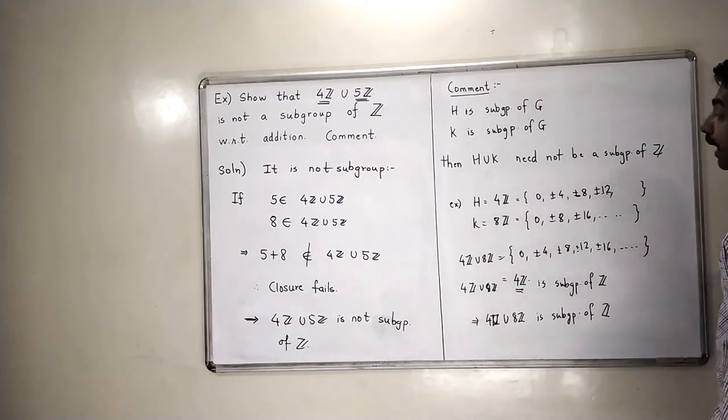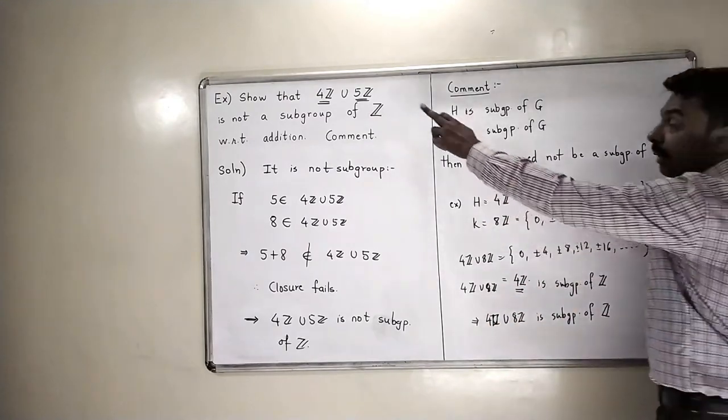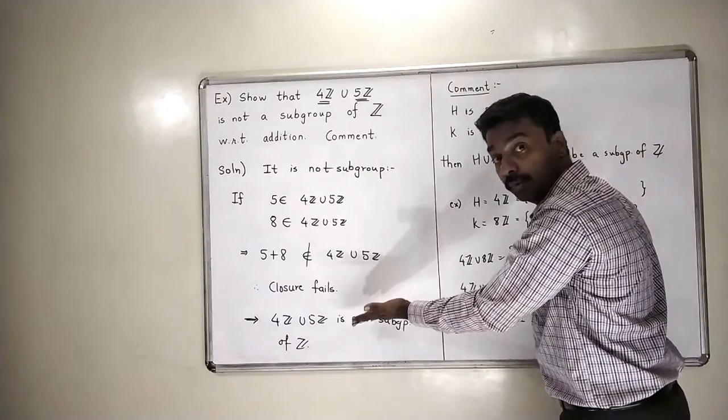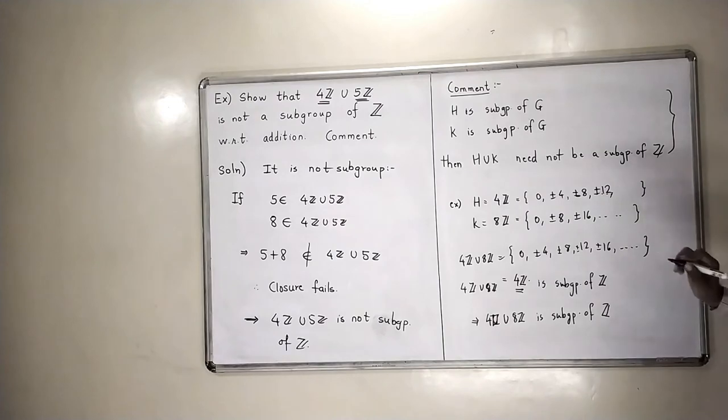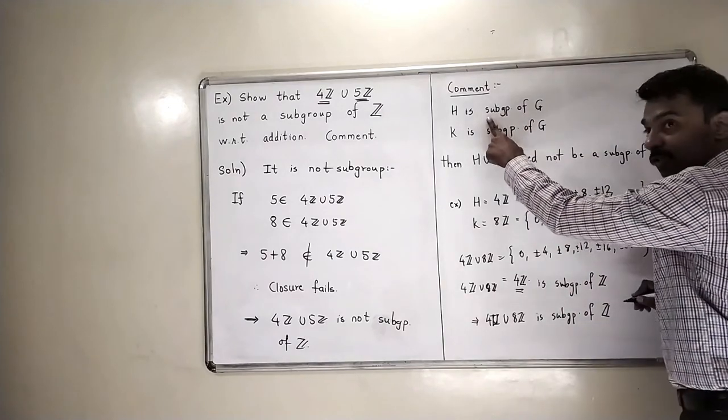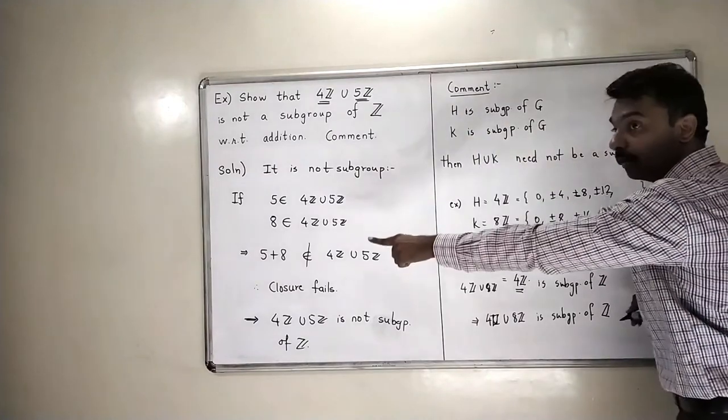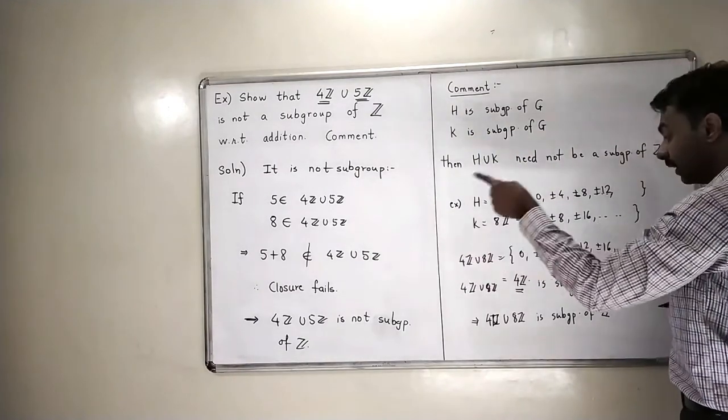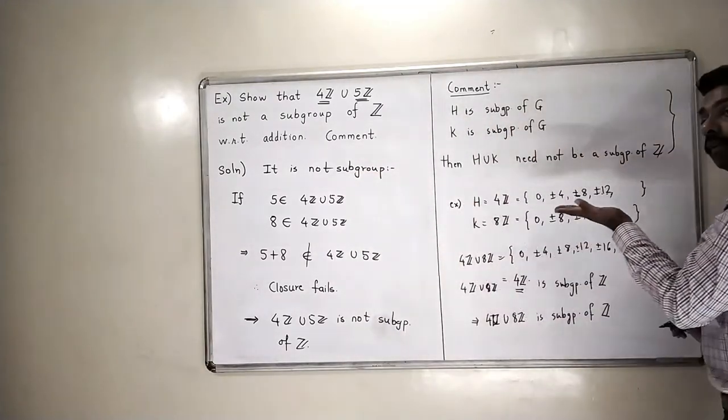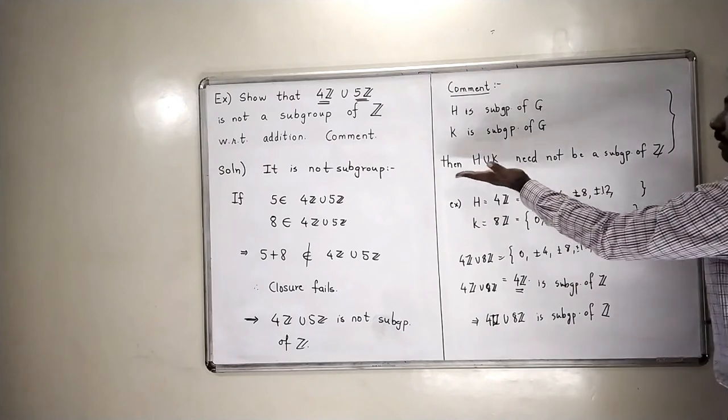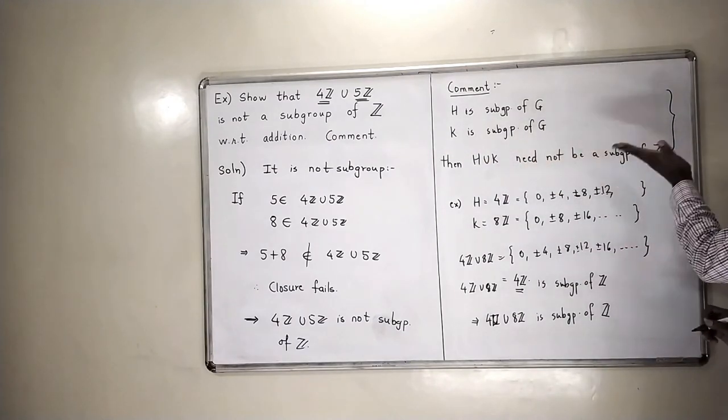So it may happen, sometimes the union can be a subgroup of Z. For examples like this, the union need not be a subgroup of Z. That is why the comment that we have made is now making sense that, if I take a subgroup H of G, if I take a subgroup K of G, can I surely say that it is not a subgroup? No. Can I surely say that it is always a subgroup? No. Sometimes it will be a subgroup, sometimes it will not be a subgroup. So that's why we are saying that H union K need not be a subgroup of Z.